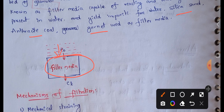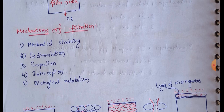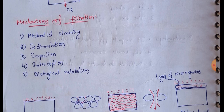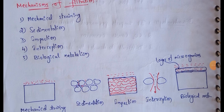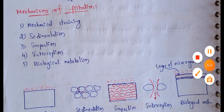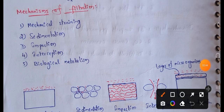Next is the mechanism of filtration. The mechanisms include: mechanical straining, sedimentation, impaction, interception, and biological metabolism. We will discuss each of these in turn.